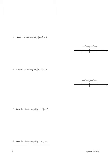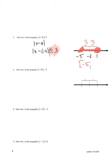Looking at another example, X plus two — that's X minus (negative two) — is less than or equal to three. I'm starting at negative two and going three units each way. I'm looking at all values that are less than or equal to three units away from negative two — including the endpoints because it's 'or equal to'. So the solution set is the closed interval from negative five to one.